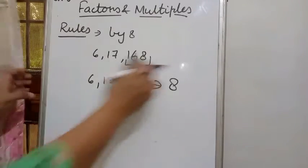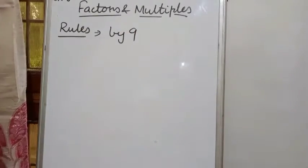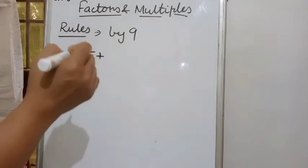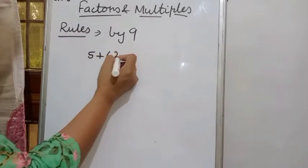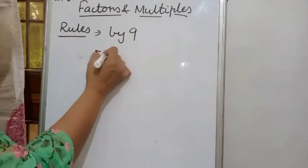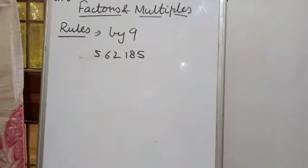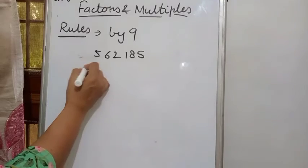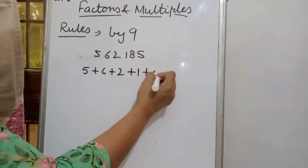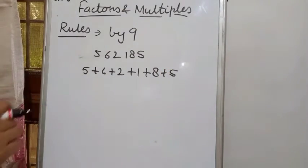Next is divisibility by 9. If the sum of its digits is divisible by 9, the whole number will also be divisible by 9. Let's take the number 56218 — we will find the sum of all its digits. Just like we check divisibility by 3, we do the same here.